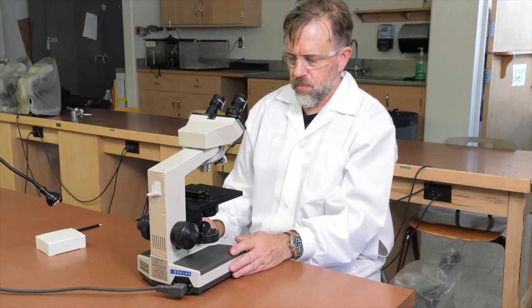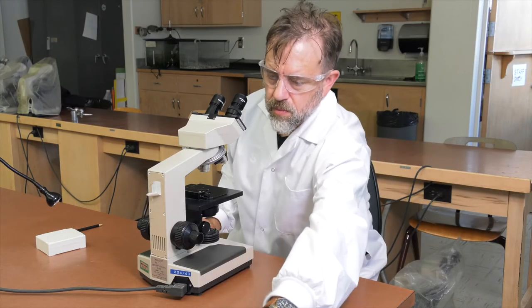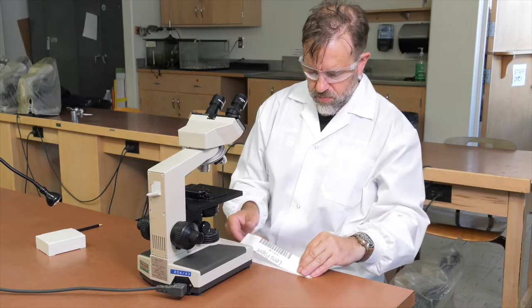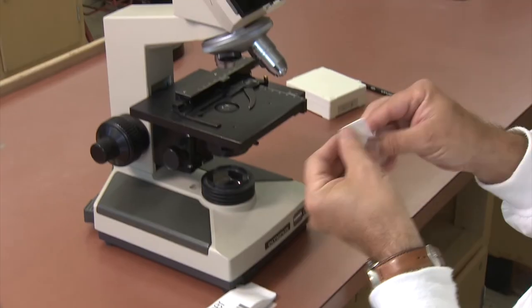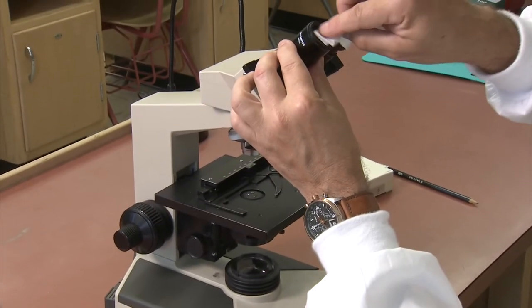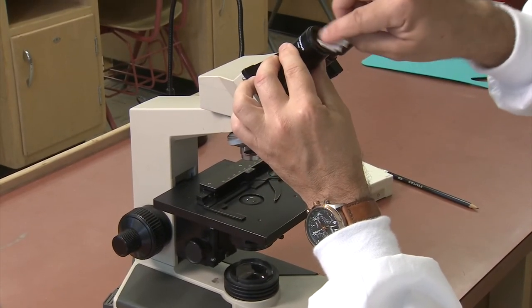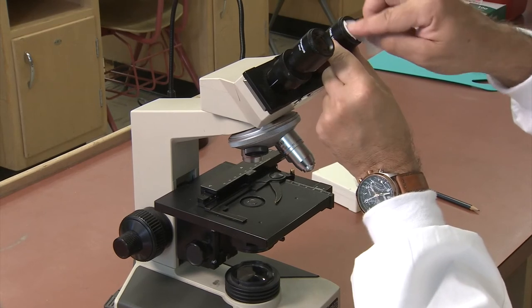Take a piece of lens paper and clean all of the visible lenses. This includes oculars, objectives, condenser, and the surface of the light source. Be careful to not touch the glass surface of the lenses with your fingertips. The oils in your skin can cause damage.